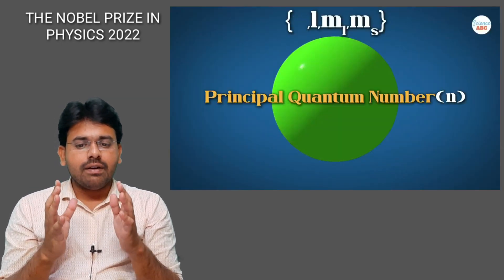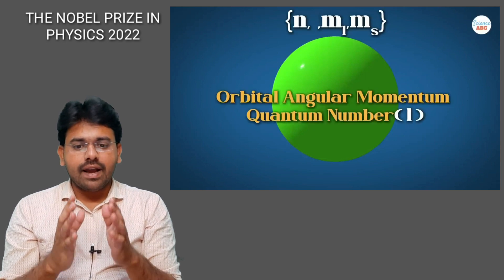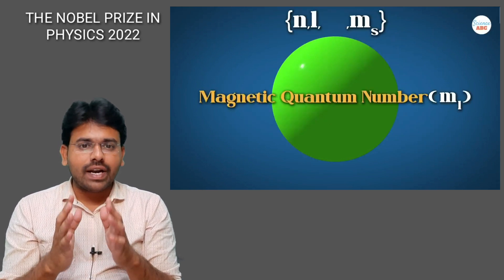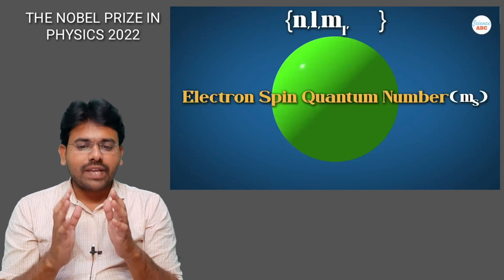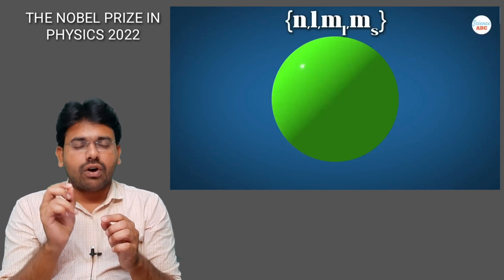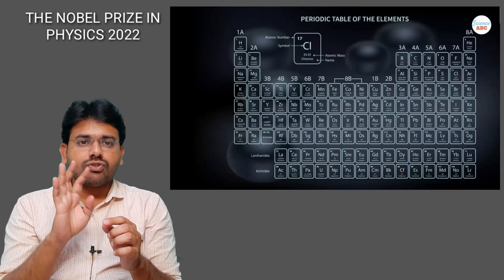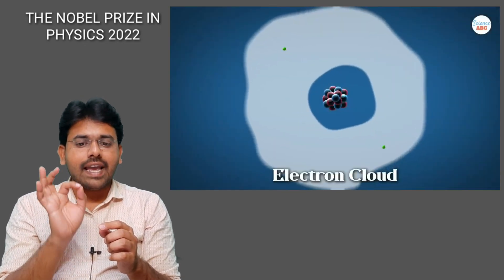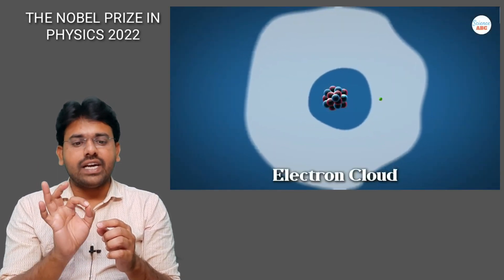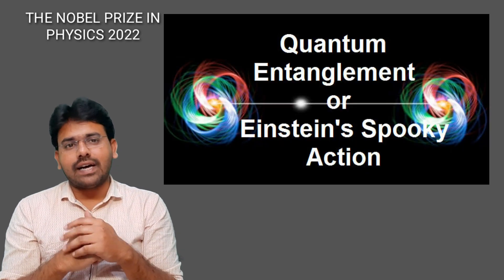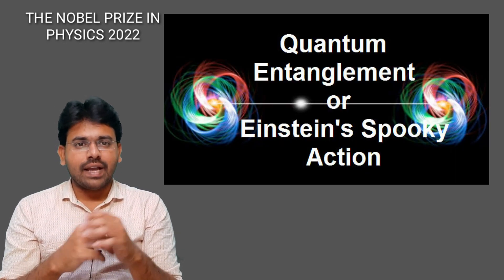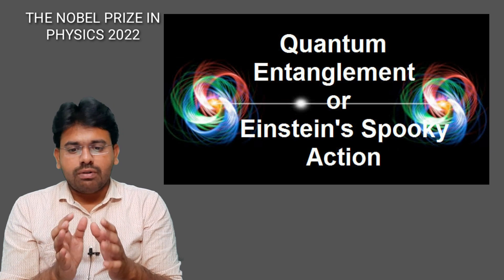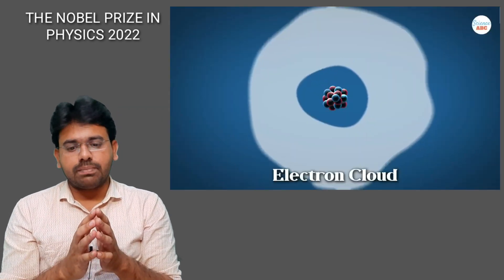The quantum numbers are: n is the principal quantum number, L is the orbital angular momentum quantum number, M1 is the magnetic quantum number, and MS is the electronic spin quantum number. So we find out the X, Y, Z coordinates. But if we identify the electron, we identify it by its quantum numbers. So we have to discuss the quantum entanglement concept.